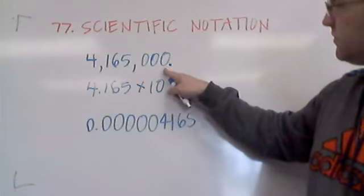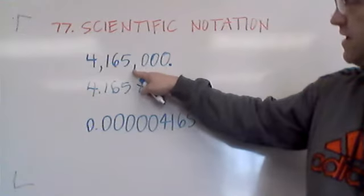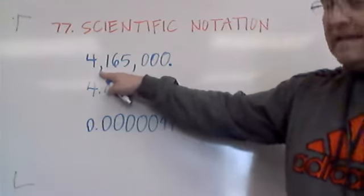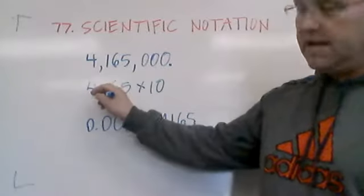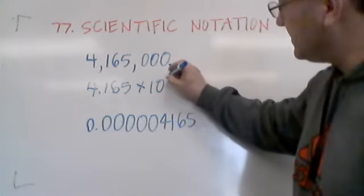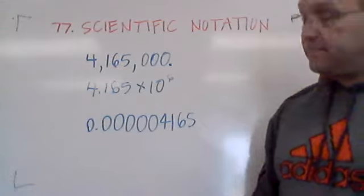So we're moving the decimal place over 1, 2, 3, 4, 5, 6 places to get it to the new location. So that becomes 10 to the 6th power.